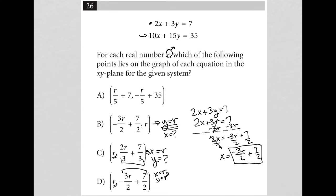Yes, it is. It does, in fact, tell me negative 3r over 2 plus 7 over 2. So, that means B is the correct answer.